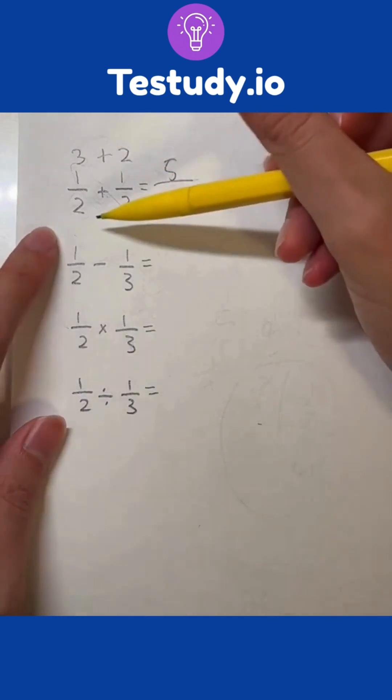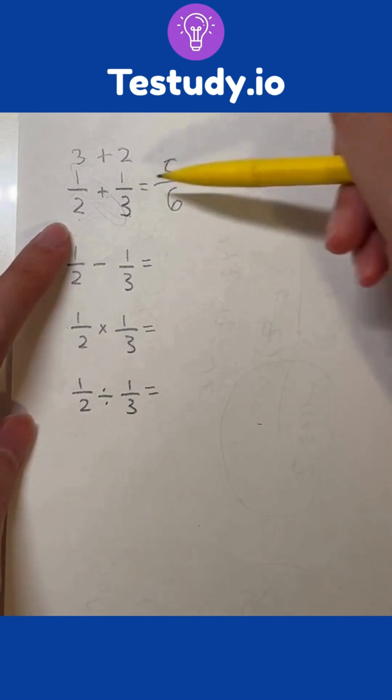And as for the denominator, I just multiply them. Two times three is six. So that's the sum.